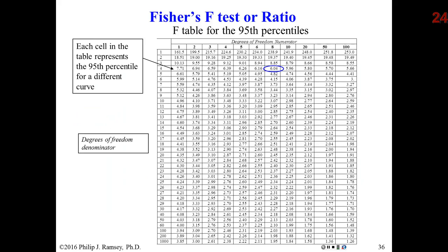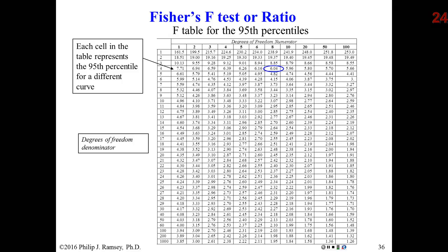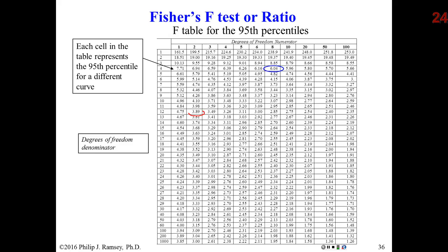Traditionally you would go to tables of the F distribution and look up the particular percentile — the rows represent the degrees of freedom for the denominator and the columns the degrees of freedom for the numerator. In our particular case, the degrees of freedom for the denominator are 2 and for the numerator are 12. Our 95th percentile is 3.89. If our F ratio exceeds 3.89, we reject the null hypothesis.